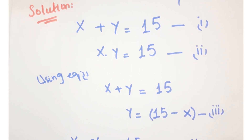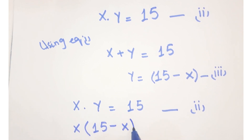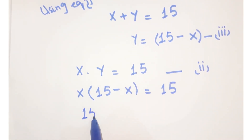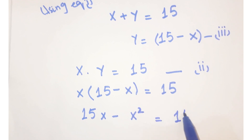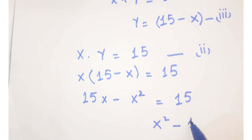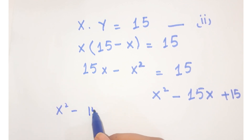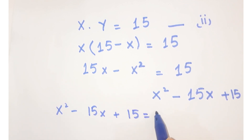Putting the value of y here, we get x times (15 minus x) equals 15. Further, you can write this as 15x minus x² equals 15. Moving these terms to the right-hand side, you get x² minus 15x plus 15 equals 0.